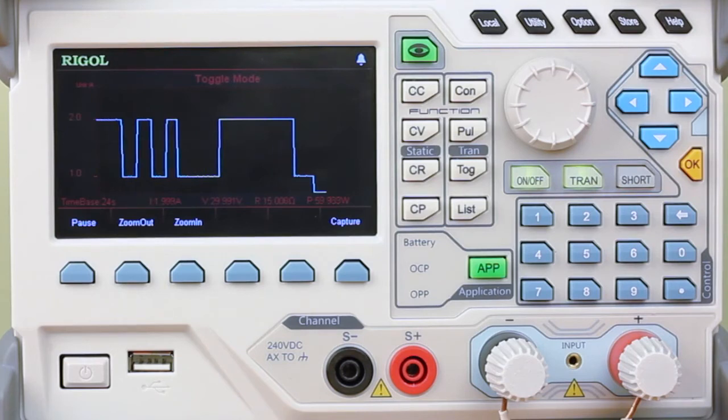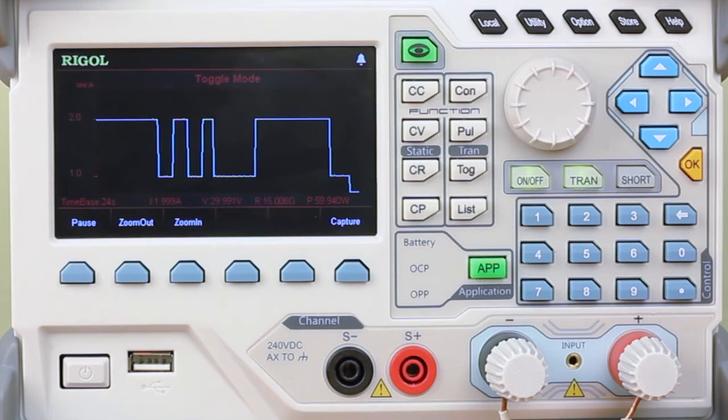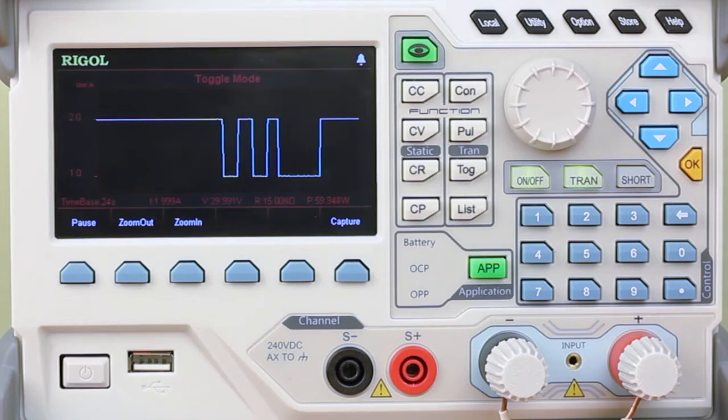So in summary, the Continuous Mode is great for high speed testing, Pulse Mode is great for time testing, and Toggle Mode is really perfect when you need really manual or triggered state changes.